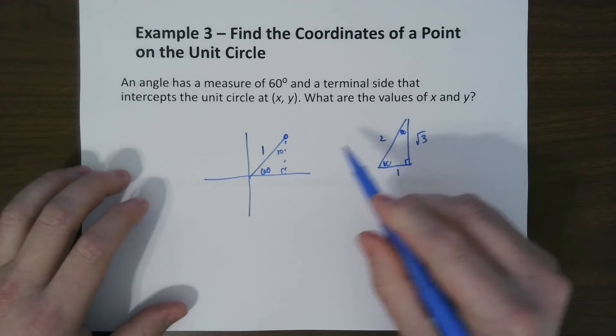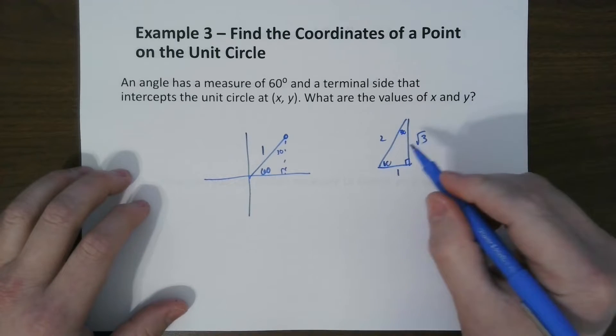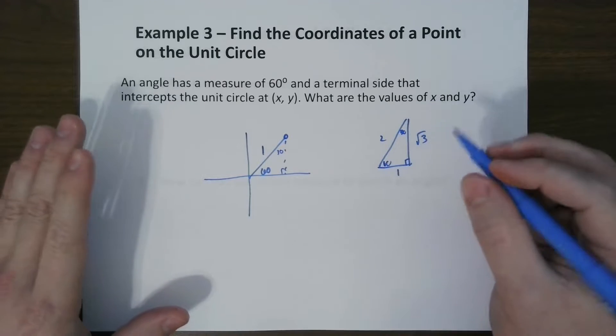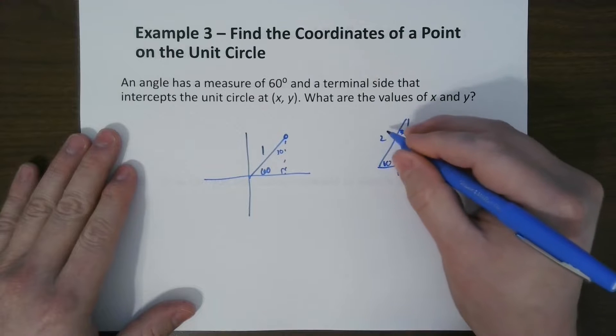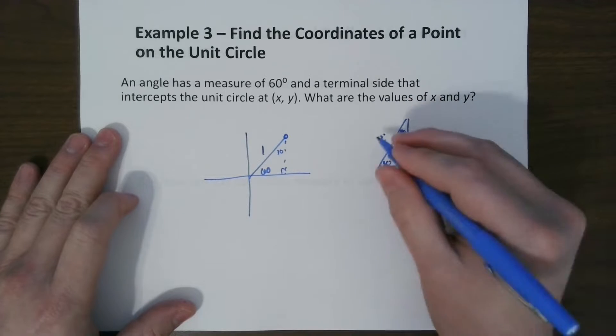So we know for 60, which is, we first got to find cosine, which is our x. Cosine of 60 would be adjacent over hypotenuse, so 1 over 2,